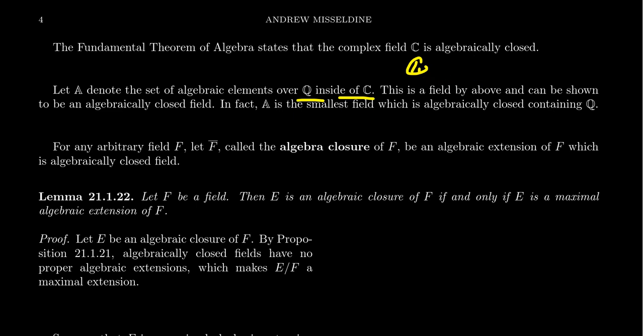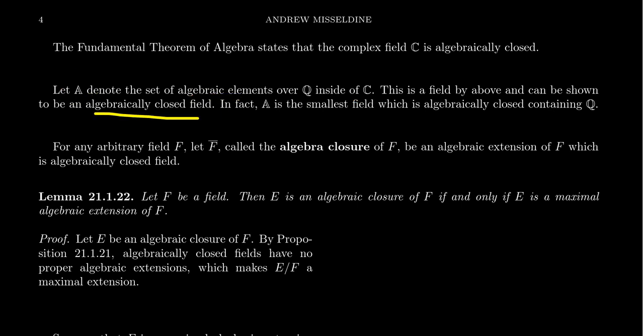Let's take A — blackboard bold A — to denote the set of all algebraic elements in the complex number field over Q itself. We proved previously that the collection of algebraic elements in a field extension itself forms a subfield living in the middle, which by construction is necessarily an algebraic extension. So take A to be all the algebraic elements of C over Q.